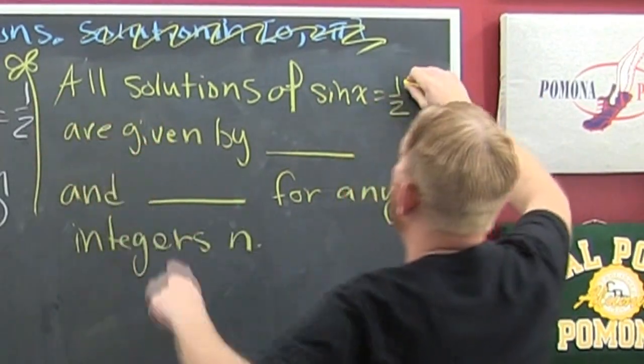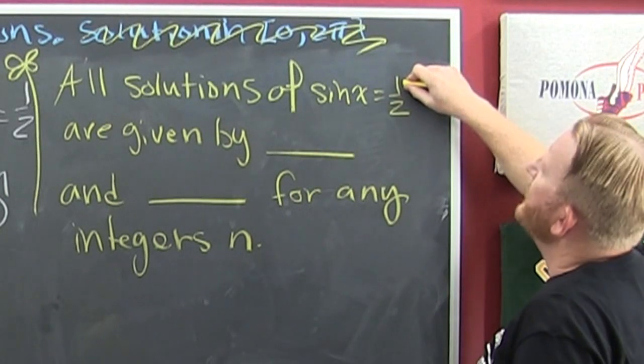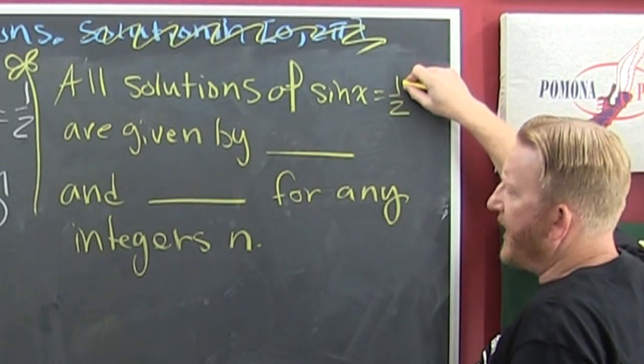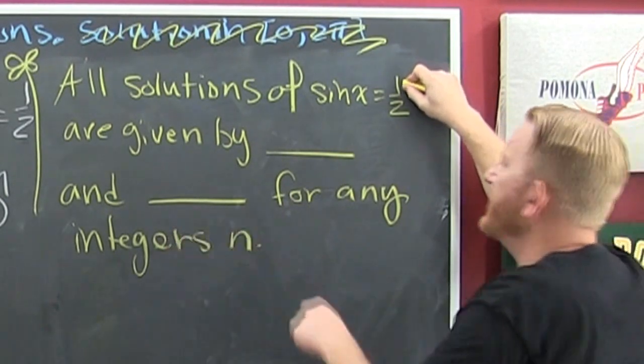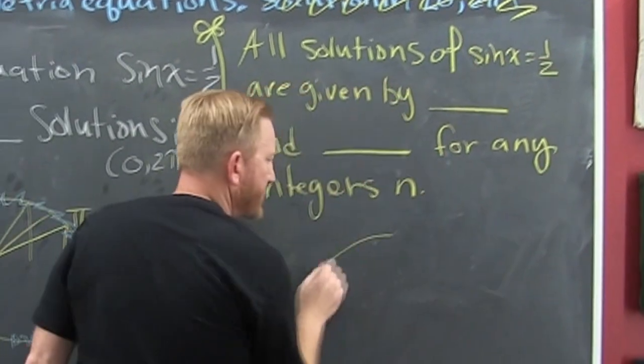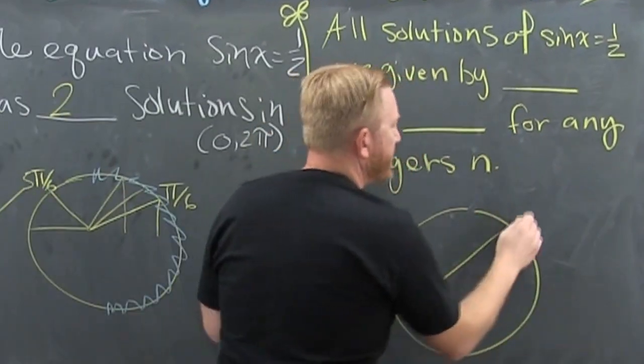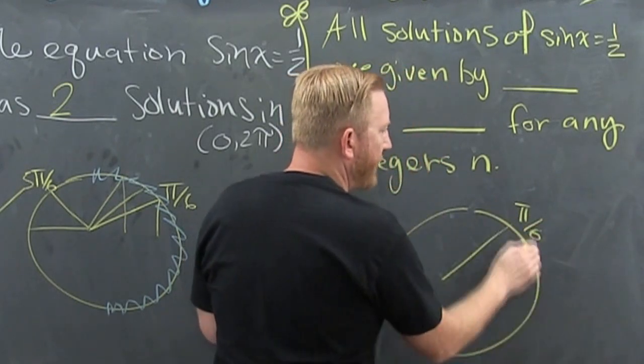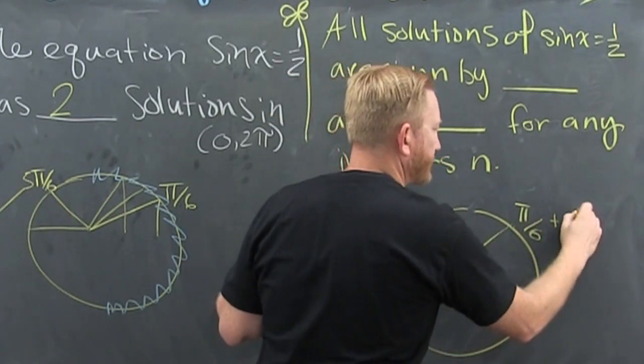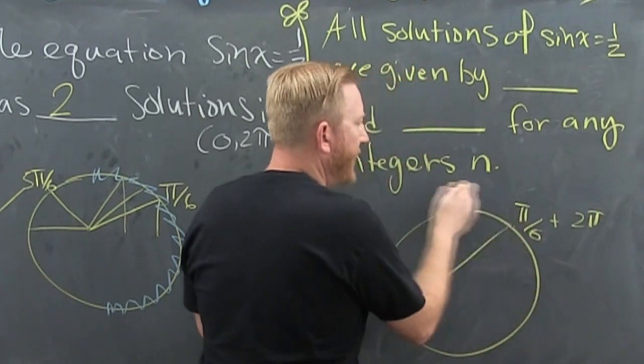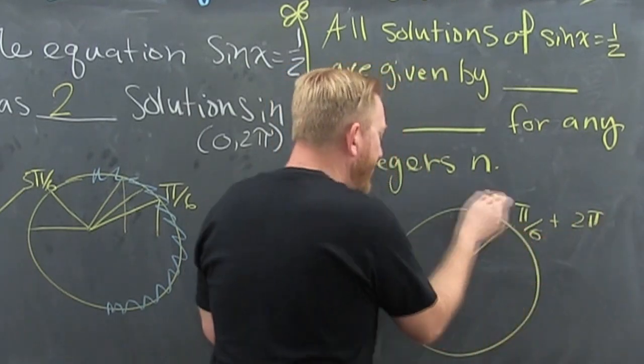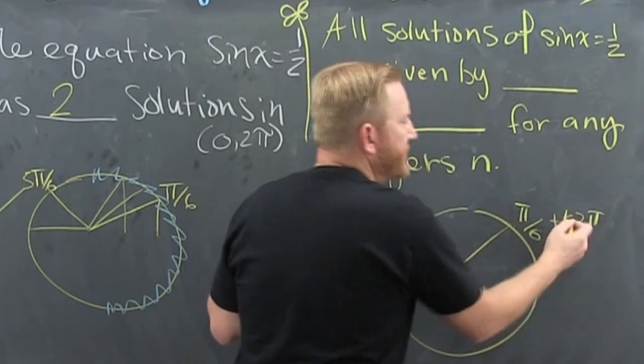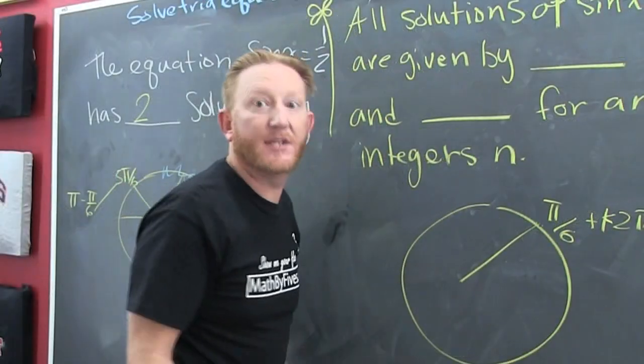Now, what if we were looking for all the solutions to sine equals one half? Those are given by, well, that one. It's all the way around. So I have this one, the first positive. That's pi over six. And then every time around, add two pi. And then add two pi again. And then add two pi again. So it's chaotic. This is chaotic!